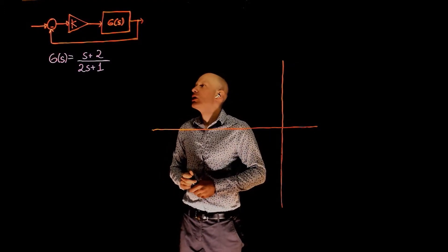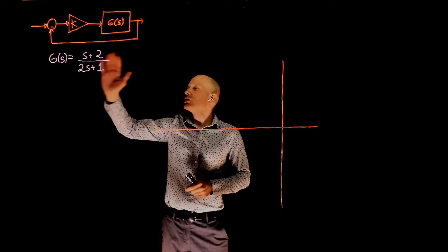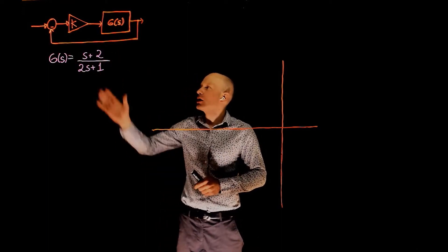In this series of exercises, we'll be looking at the root locus of a function g of s that is used in a unit feedback loop as the one shown here.